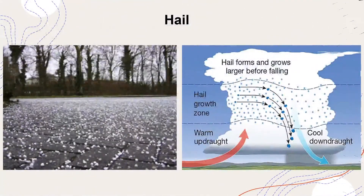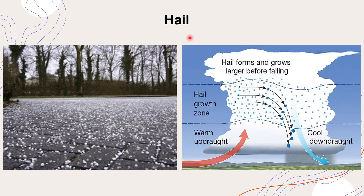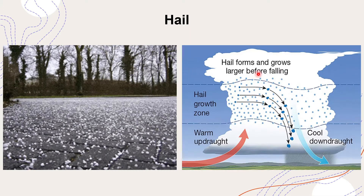Next we come to hail. Hail or hailstorm or hailstone is another form of precipitation which consists of pellets or balls of ice with a concentric layered structure, usually associated with strong convection currents of air in cumulonimbus clouds. They fall along with rain or sometimes all by themselves. Very often they are very destructive — they damage standing crops and are often associated with thunder and lightning.